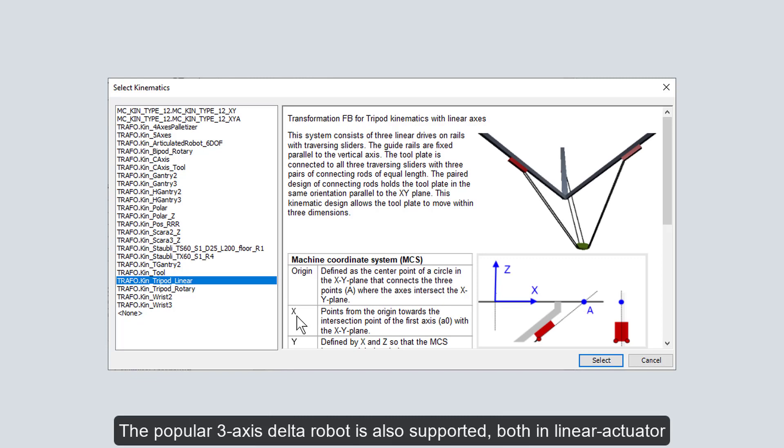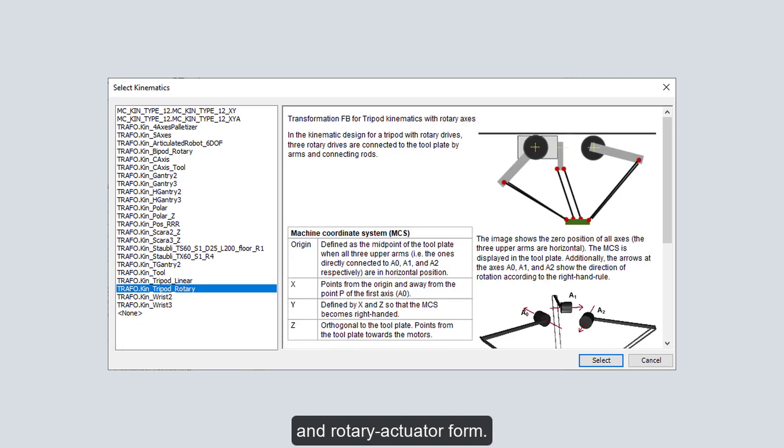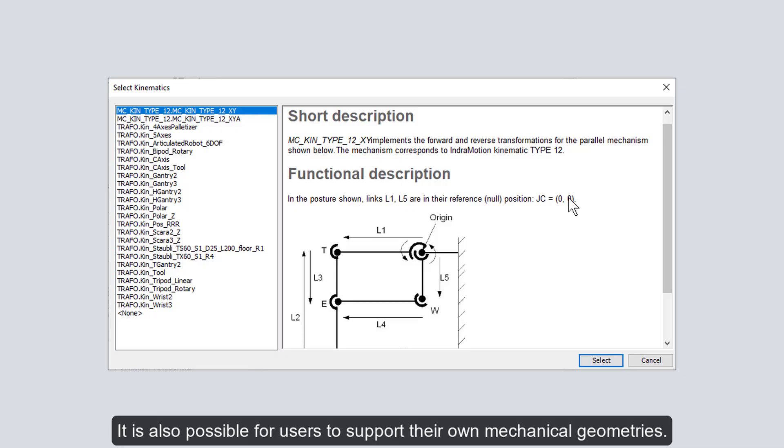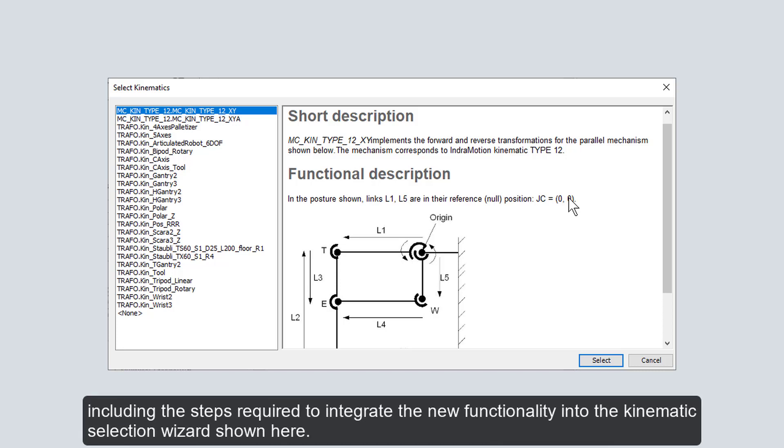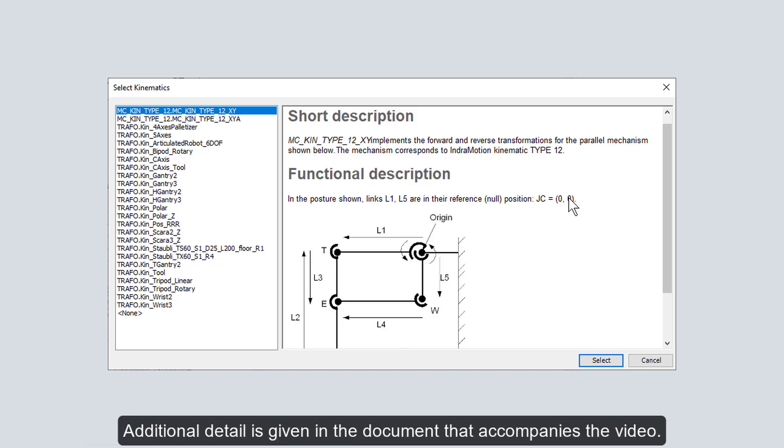The popular 3-axis delta robot is also supported both in linear actuator and rotary actuator form. It's also possible for users to support their own mechanical geometries. Here we show a common two-dimensional parallelogram type actuator. The rest of the video will give an overview of the steps required to create such a user-defined kinematic, including the steps required to integrate the new functionality into the kinematic selection wizard shown here.